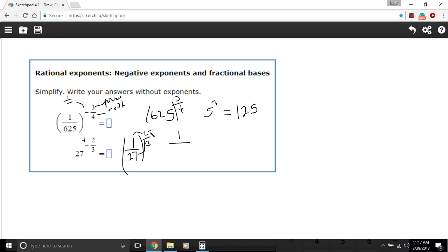On the bottom, 27 to the two-thirds power - we've got power and root. I know the cube root of 27, it's three. Three times three times three is 27. So this would be three, and then squared. So this would be one ninth. That is a little bit of work with these negative rational exponents and fractions as bases.